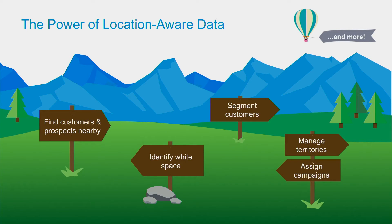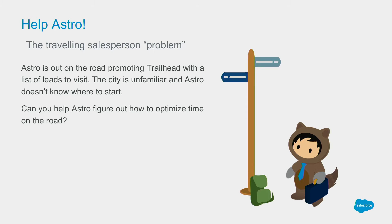Let's look at an example of a problem we could solve using geolocation. Here's Astro — right now Astro's on the road promoting Trailhead in an unfamiliar city. Astro's got a list of leads but isn't sure how to prioritize it or optimize time on the road. I want to spend as little travel time as possible so I can spend the most time talking to leads, so I'd start with the leads closest to me. If all we have are addresses, that doesn't tell us much — but once the data is geocoded, we can really start to make something happen.